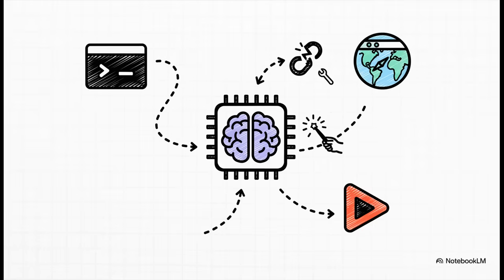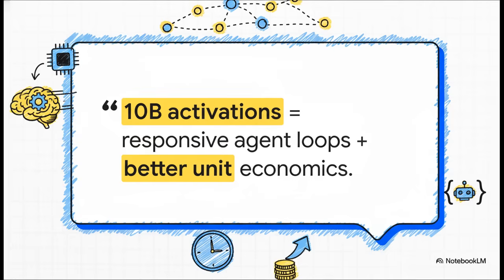And then there's the agent side of things, which is just as cool. Minimax M2 can act like a true assistant — it can plan out complex multi-step jobs that require juggling different tools. Maybe it needs to use the terminal, then jump over to a browser, then run some code. And maybe most importantly, it's built to handle errors. When something breaks, it doesn't just give up — it tries to recover. That 10 billion active parameter limit means you get super responsive agent loops, no more waiting around, and way better unit economics. It's cheaper to run, plain and simple.